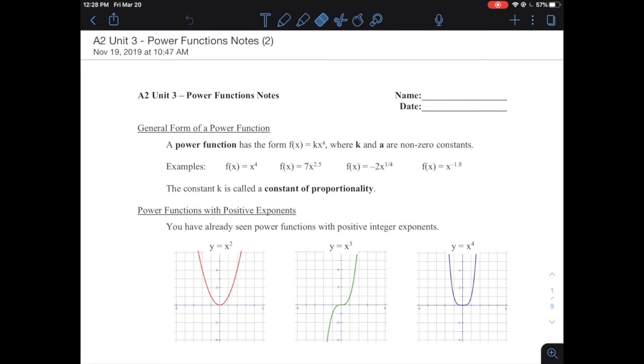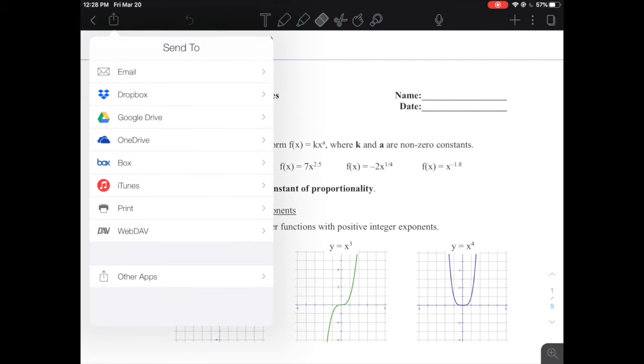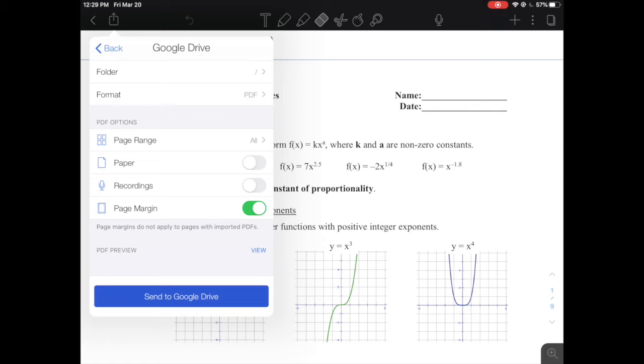So if you are here in Notability and you see the up arrow on the top left corner of the screen, you can see that there's an option for a whole host of things here, Google Drive being one of them. But I've found that Google Drive is a little bit slow and a little bit clunky when you do it this way.